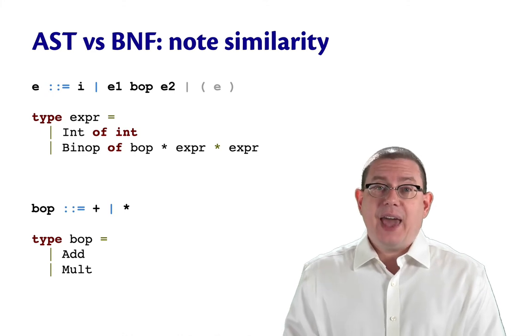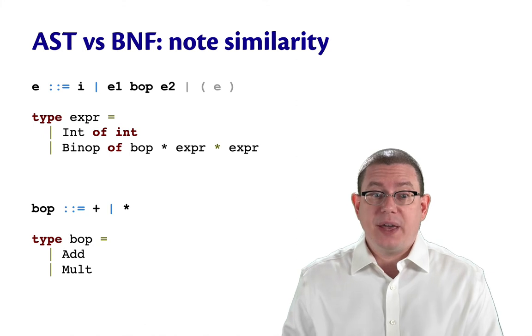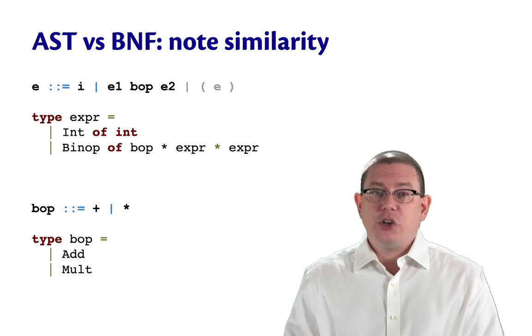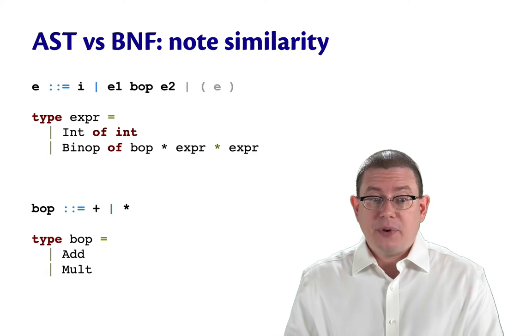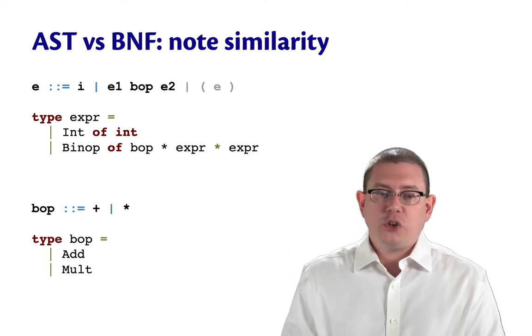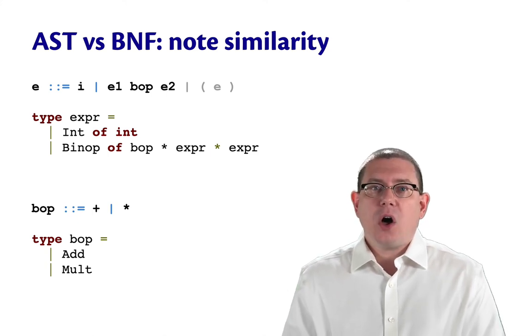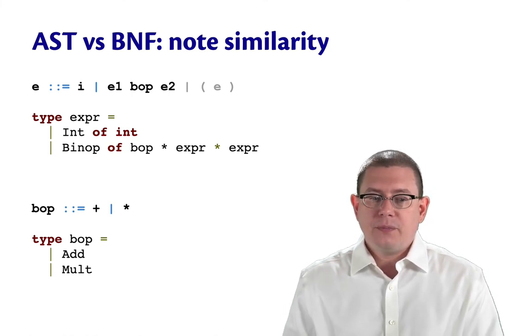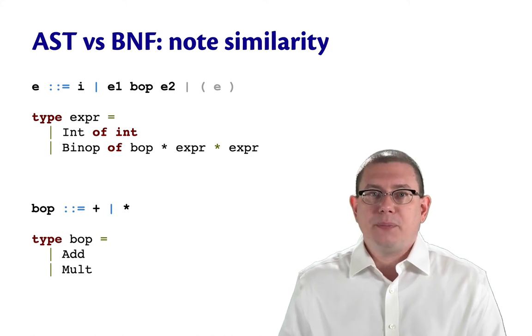One thing to notice is that the AST and the BNF correspond quite closely to one another. In the grammar, the BNF, we have expressions that can either be integers or binary operators or parenthesized expressions. And in the AST type, we have constructors for the first two of those, integers and binary operators. We don't represent the third because that is a piece of concrete syntax that we don't need anymore when we've abstracted to just a tree. Likewise, in the BNF, we had plus or times for binary operators, and we ended up with a type in our AST for representing plus and times as well.